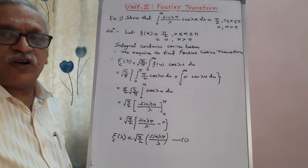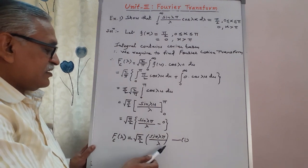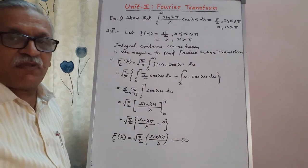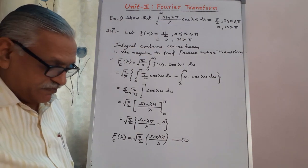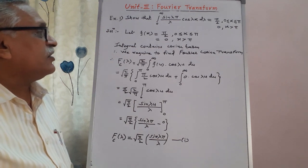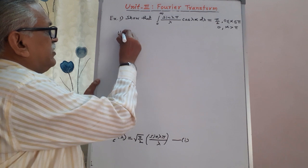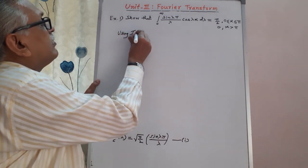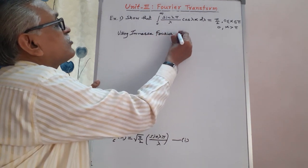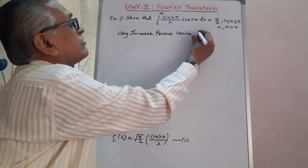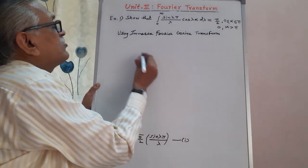The first part is now complete. In that part I calculated the Fourier cosine transform and denoted it as equation number 1. In the next part, we require to find the inverse Fourier cosine transform by applying that result.